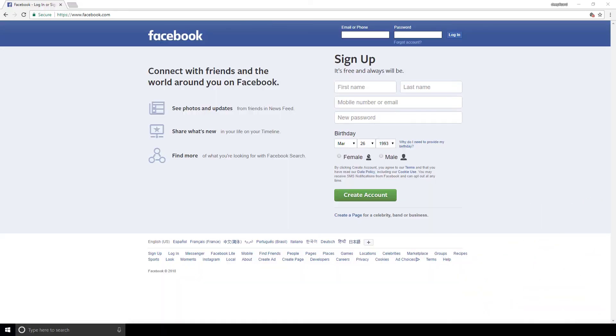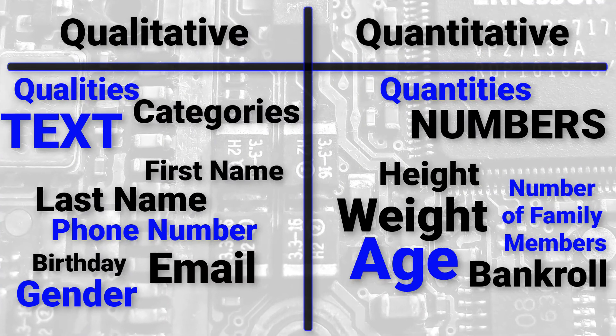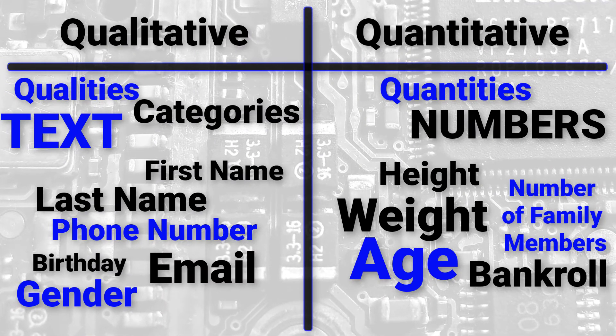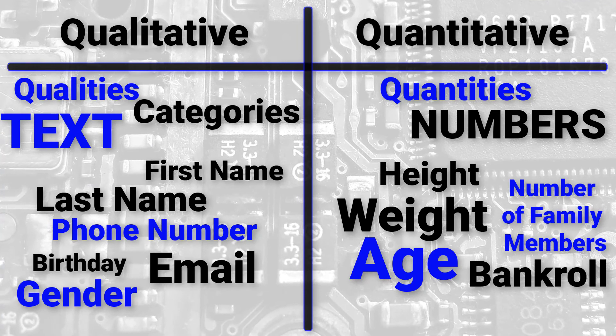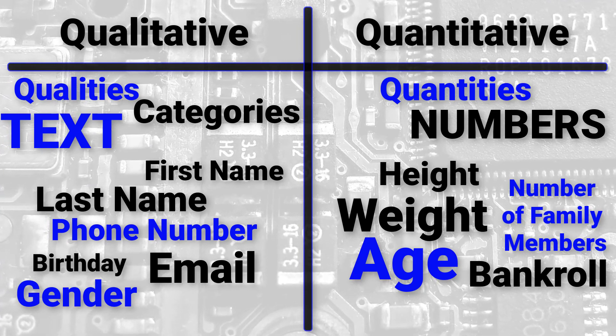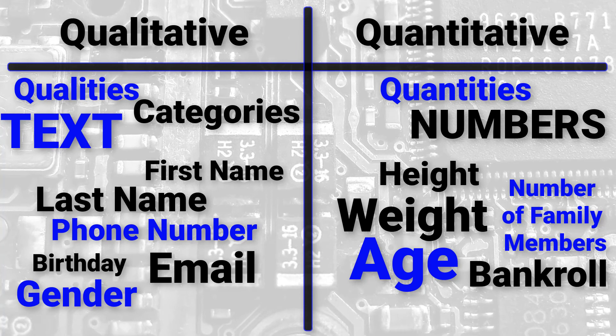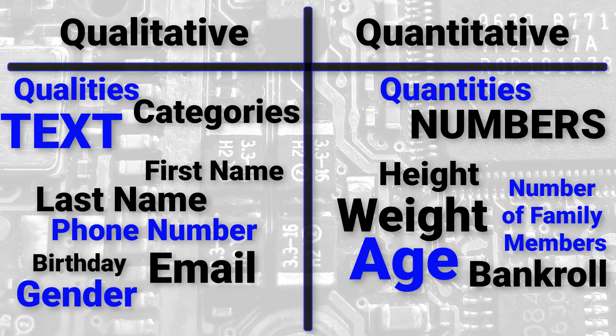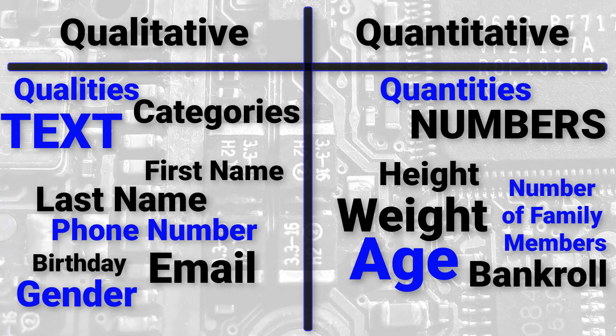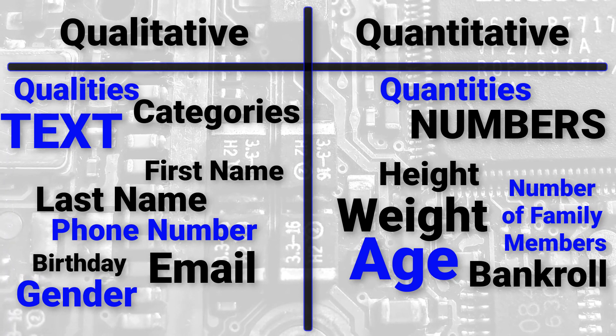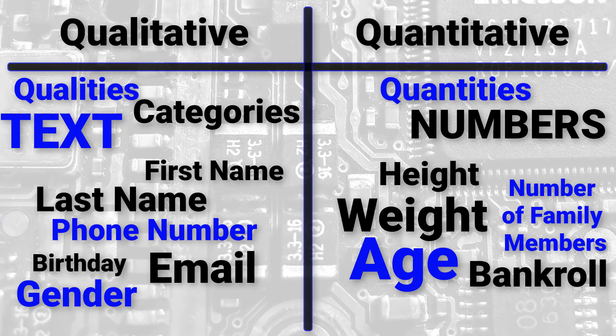The main point here is that data inside computer programs is just text and numbers. One of the most critical skills of programming is the ability to figure out how things in the real world can be represented using text and numbers. We take objects and concepts from the real world and describe their qualities with text and their quantities with numbers. This is how we represent the world inside computer programs.